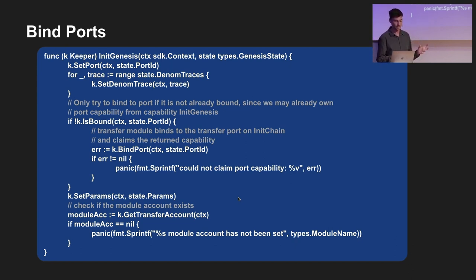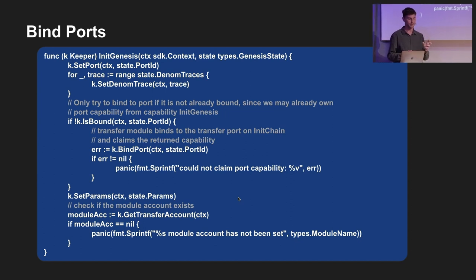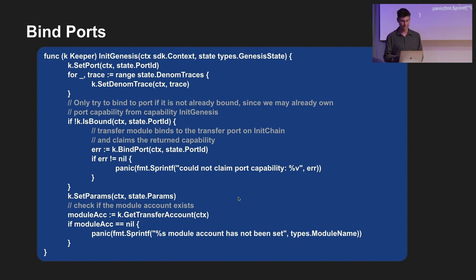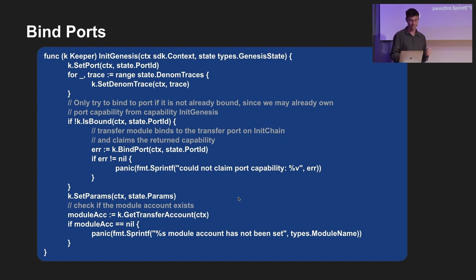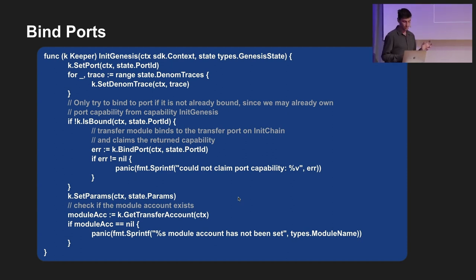An important thing already there is you want to make sure no one else is binding to that port ID. When the blockchain starts, it can't have another transfer module using the same port - each port has to be unique, and in this instance we panic if it's not. Then there's a bit of other logic like params, and that's how we initialize.